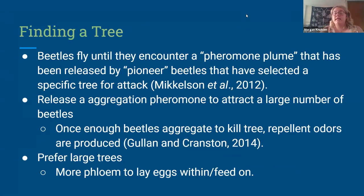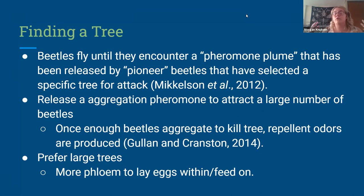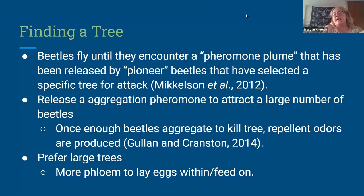How do they find a tree? Beetles leave as adult beetles through those little holes and fly until they encounter a pheromone plume released by pioneer beetles that have been in the area. The beetles that leave as adults ready to mate leave behind this pheromone plume attracting other beetles, saying this is a good place — the trees are weakened and there's lots of phloem here. When they find this area, the group releases an aggregation pheromone to attract a large number of beetles. Once it gets overcrowded, they release repellent anti-aggregation pheromones telling other beetles to stop, there are enough here, go attack elsewhere. And they prefer larger trees because there's more phloem and more area to lay eggs.